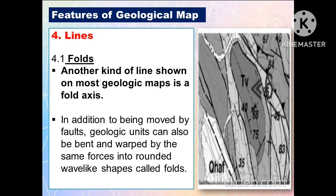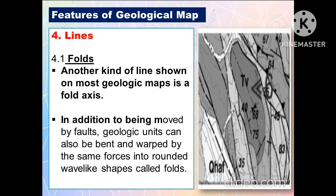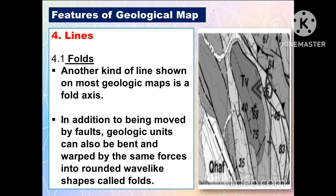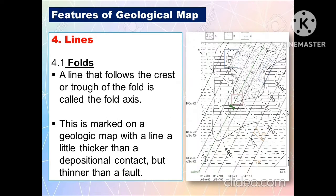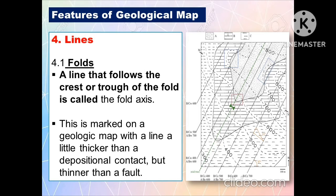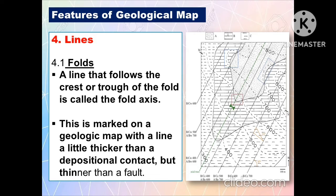Another feature of geological maps is another kind of line — the fold axis. In addition to being moved by faults, geologic units can also be bent and warped by the same forces into rounded, wave-like shapes called folds. A line that follows the crest or trough of the fold is called the fold axis. This is marked on the geologic map with a line a little thicker than a depositional contact but thinner than a fault.